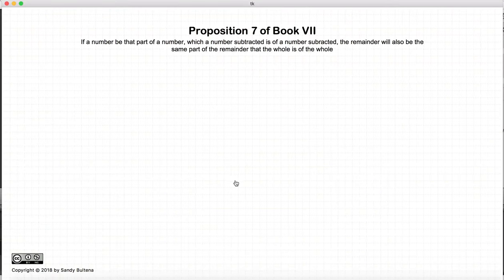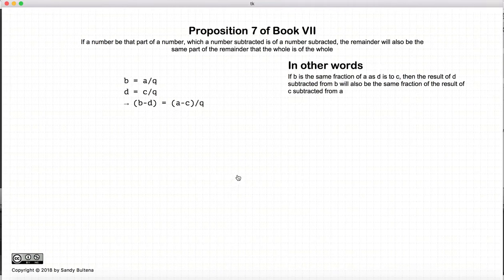This video presentation will be on Proposition 7 of Book 7. Now in this proposition, we are dealing with fractions again, and basically this proposition states that if b is a part of a, or a fraction of a, and d is a fraction of c, then if we take b minus d, it will be the same fraction of a minus c.